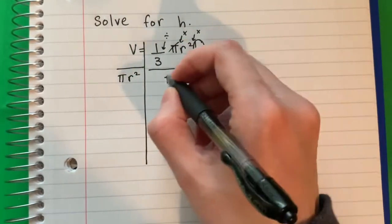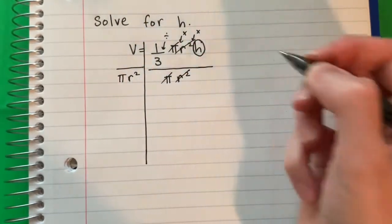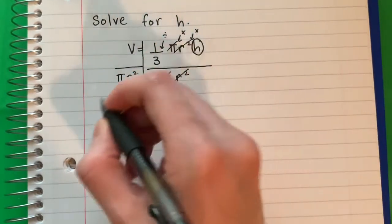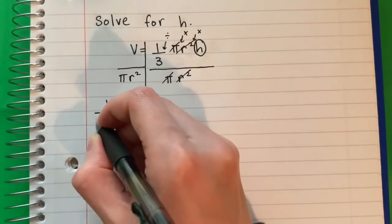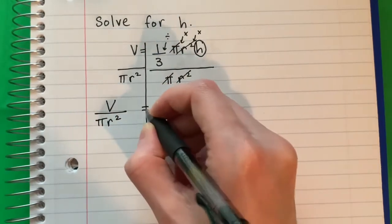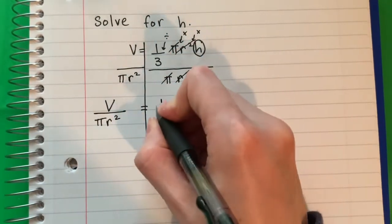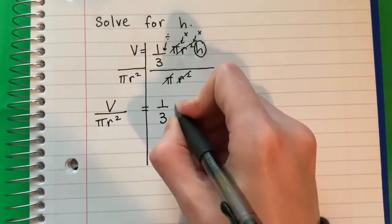π and π, r squared and r squared. They cancel, they're 1. I'm going to copy V divided by π r squared equals, copy 1/3 h.